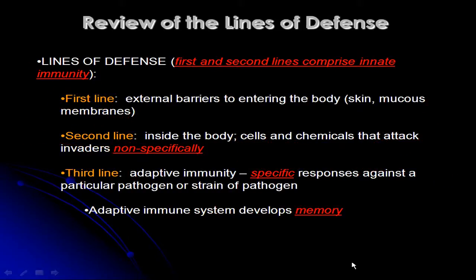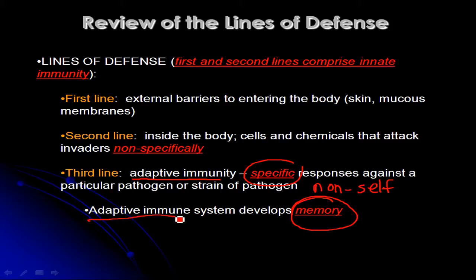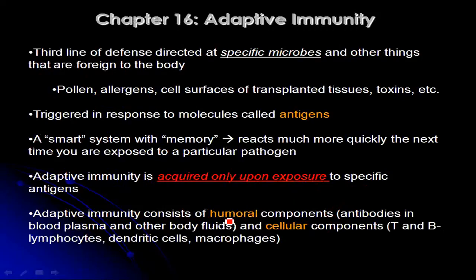Now we're going to talk about the third line of defense, which involves adaptive immunity. These are responses that are very specific against a particular pathogen, a strain of a pathogen, or other specific non-self things — like a particular molecule on the surface of a peanut if you have a peanut allergy. Another key feature of adaptive immunity is that the adaptive immune system develops memory, so it's able to remember that you've been infected with a particular pathogen in the past, and the next time you're infected, that adaptive immune response will occur much more rapidly.